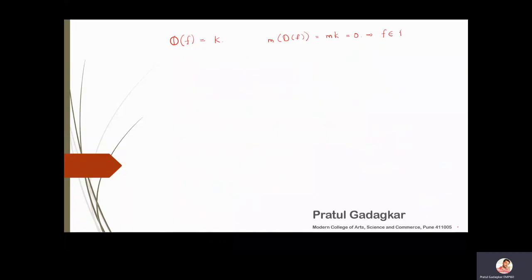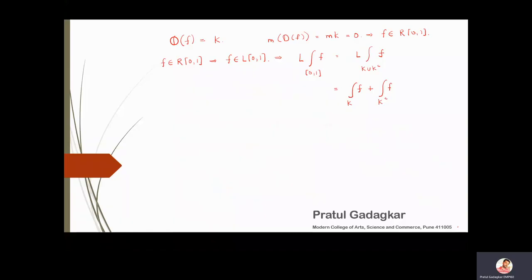Since f is Riemann integrable, and every Riemann integrable function is Lebesgue integrable, f is also Lebesgue integrable. To compute the Lebesgue integral of f over [0,1]: since [0,1] is the disjoint union of K and K complement, we can write the integral as the integral of f over K plus the integral of f over K complement. On K, f = 1; on K complement, f = 0.